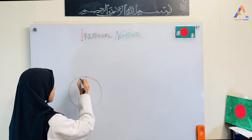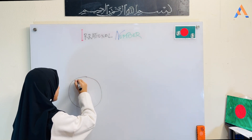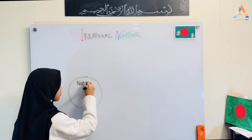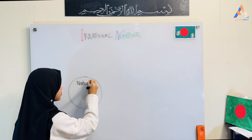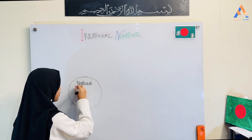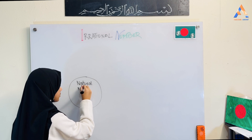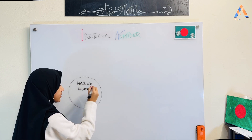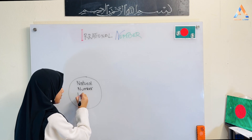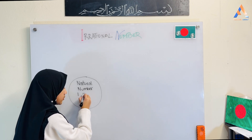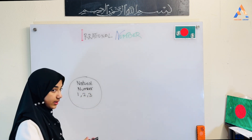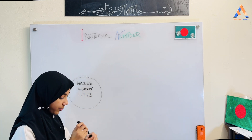The next one is natural numbers. Natural numbers — for example, natural numbers: one, two, and three.